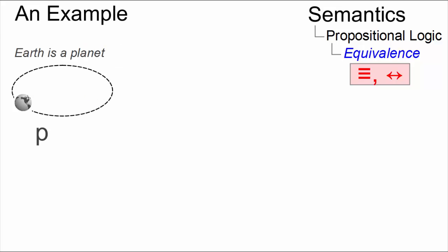Here are two propositions. P, Earth is a planet. Q, Earth is a solar satellite. Both propositions are true.